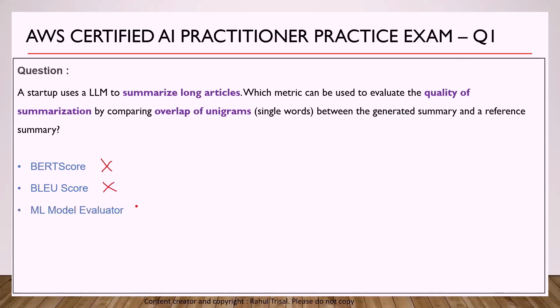The third option is ML model evaluator — there is no such metric; it's just a distractor. Finally, we have ROUGE score. ROUGE score is used for evaluating the quality of summarization, so it meets those two criteria, and it also does comparison by matching word-to-word. It can be a unigram, matching one-to-one words, or a bigram, matching two words at a time. So ROUGE score is the correct answer to this question.